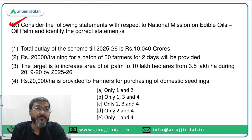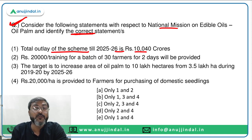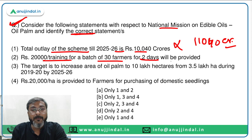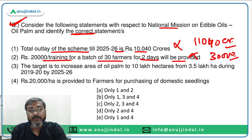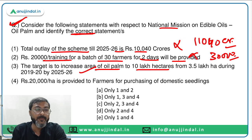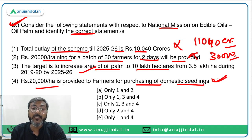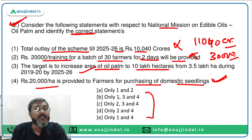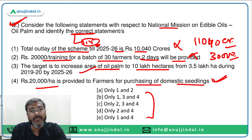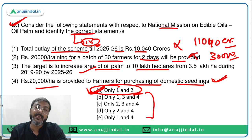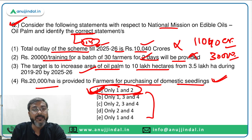The second question asks to identify the correct (or incorrect) statement regarding this mission. Statement 1: total outlay till FY2026 is Rs. 10,040 crores — incorrect, it is Rs. 11,040 crores. Statement 2: Rs. 20,000 per training for a batch of 30 farmers for 2 days — incorrect, it is Rs. 30,000. Statement 3: target is to increase palm oil area to 10 lakh hectares — correct. Statement 4: Rs. 20,000 per hectare for domestic seedlings and Rs. 29,000 per hectare for imported seedlings — correct. If identifying incorrect statements, options 1 and 2 are incorrect. Corrections will be made in the PDF.